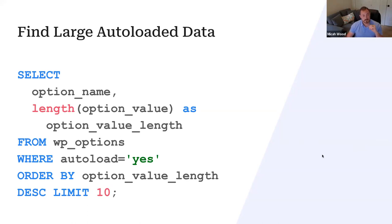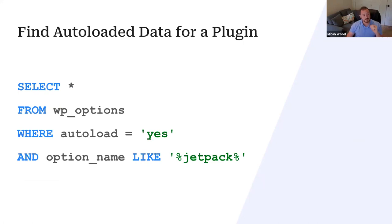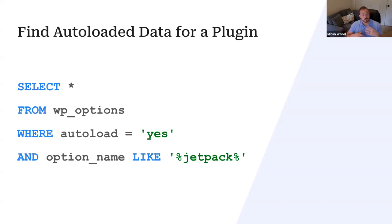By the option name, you can usually determine which plugin is associated with that particular option. For example, Jetpack does a decent amount in the options table and auto-loads it. If you've stopped using Jetpack but all those options are still in the database, it makes sense to come in and identify what's auto-loading that's no longer used. There's no plugin I'm aware of that handles this cleanup, so it's definitely a developer task — but worth looking into, especially if large things are being auto-loaded.